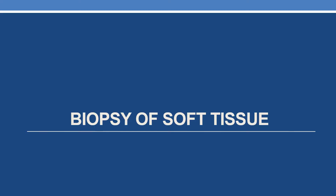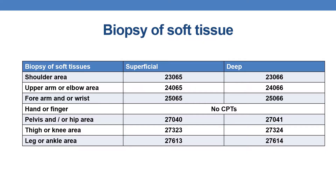Coming to the CPTs of biopsy of soft tissue for various joints. The CPTs are categorized into type of biopsy — whether it is superficial or deep. When it comes to the shoulder area, for superficial biopsy of soft tissue, you need to report 23065. And for deep biopsy of shoulder area, you need to report 23066.